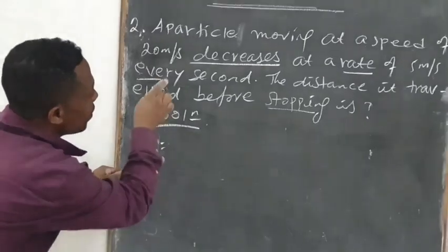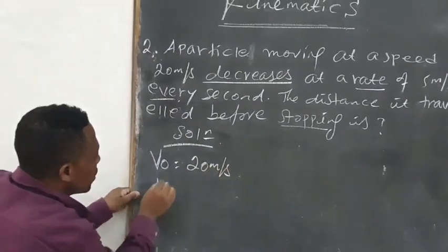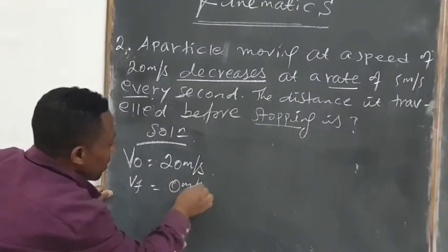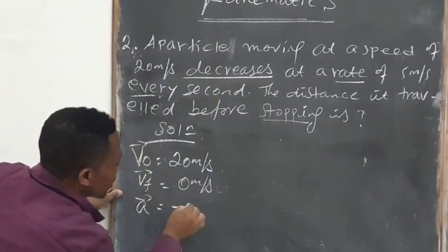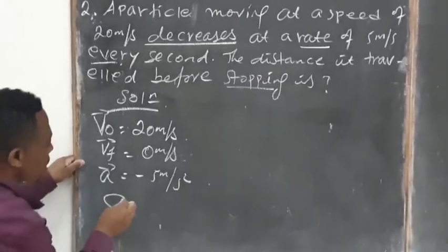Now look, the given quantities: the initial velocity given to us is 20 m per second, and then V final is given which is 0 m per second, and then its acceleration is also given to us, which is -5 m per second squared. We need to find distance first.